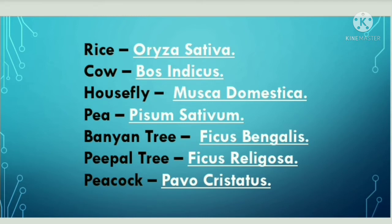Scientific name of pea is Pisum sativum. Scientific name of banyan tree is Ficus bengalensis. Scientific name of peepal tree is Ficus religiosa — this question was asked by HSSC in the year 2021 on 19th September and in the Female Commando exam, so it is very important.